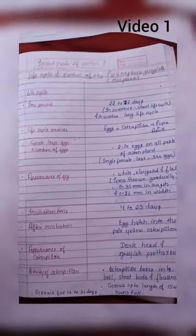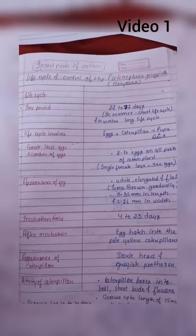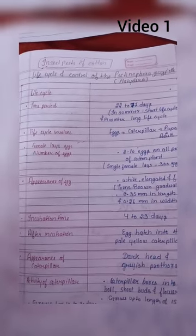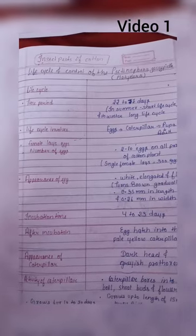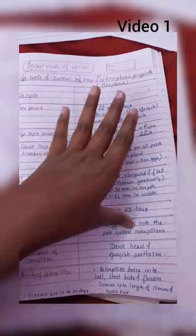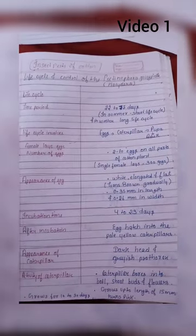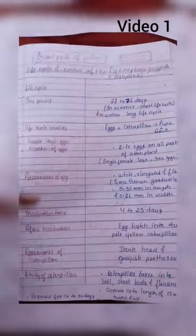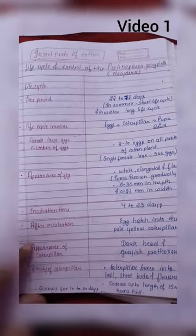Next, the incubation time - how much time until the egg changes to caterpillar. Incubation time is 4 to 23 days. After incubation, egg hatches into the pale yellow caterpillar. Then the caterpillar is formed.